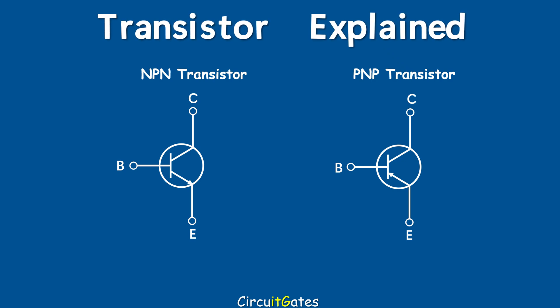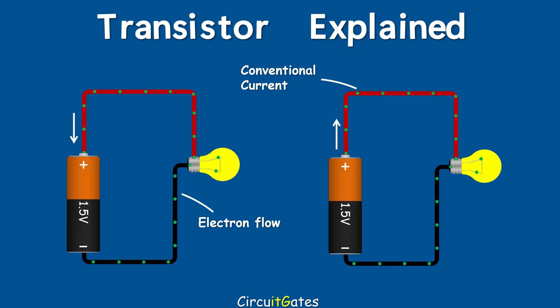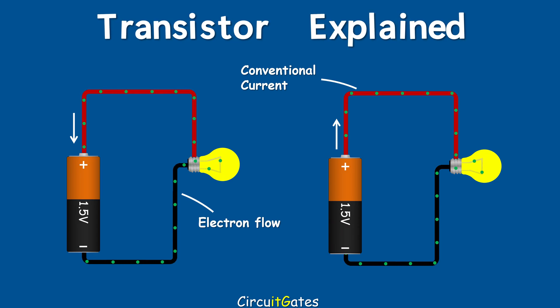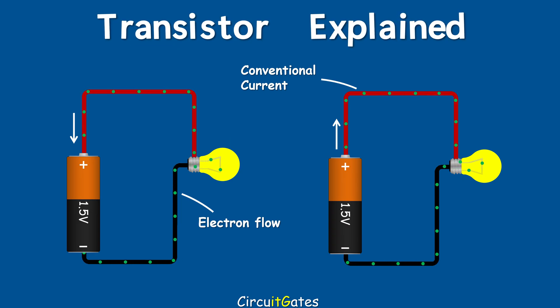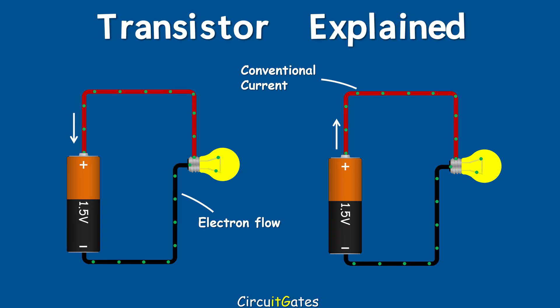To understand what actually happens inside a transistor, we shall use electron flow, which flows from negative to positive. Conventional current and electron flow are two types of current that differ in direction of flow. While the direction of electron flow is the actual direction of current, conventional current is the direction in which current was said to flow before the discovery of electrons.